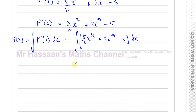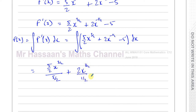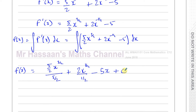Integration is the inverse of differentiation: add 1 to the power, then divide by the new power. For 5 over 2 times x to the 3/2, adding 1 gives power 5/2, then divide by 5/2. For 2x to the negative a half, adding 1 gives power a half, divide by a half. A constant term just gains an x, so minus 5 becomes minus 5x. You must always remember there is a constant of integration to write down, plus c, because any constant differentiates to zero.